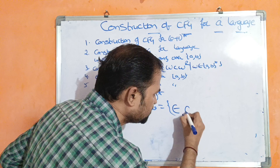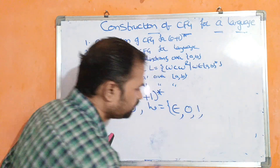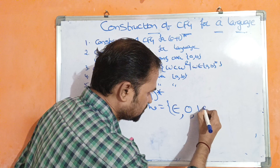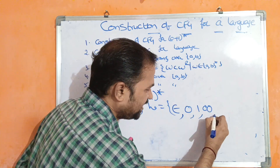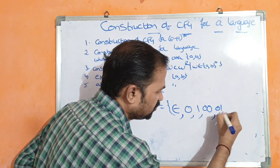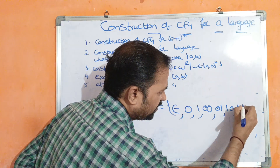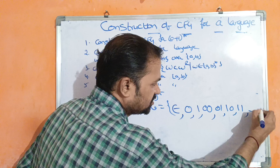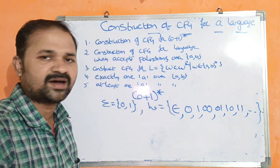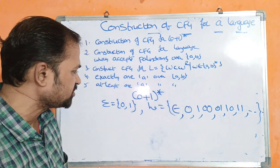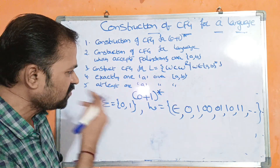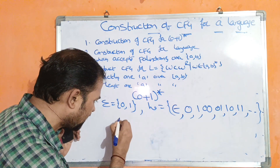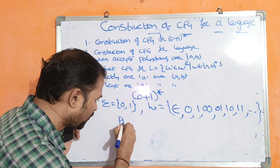Next we have 1 occurrence of 0, 1 occurrence of 1, then strings of length 2: 00, 01, 10, 11. Likewise we can take 3 combinations, 4 combinations and so on. This is the language for this expression. Our target is to construct a context-free grammar, so first let us derive the production rules.